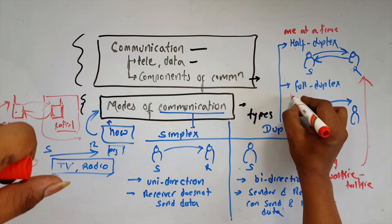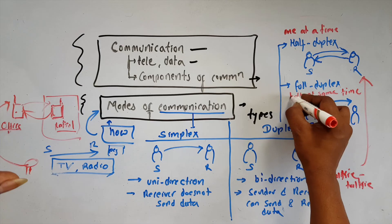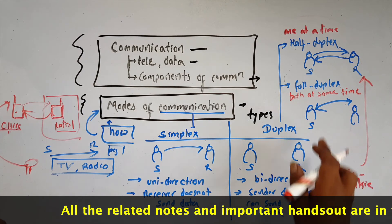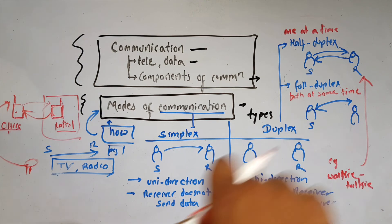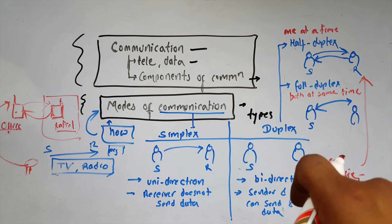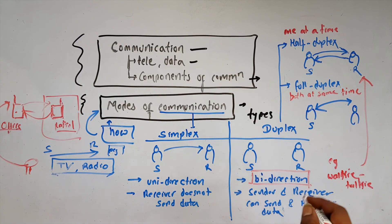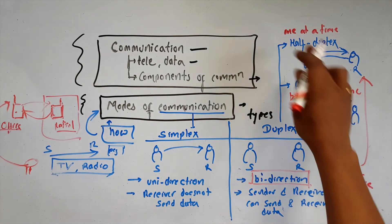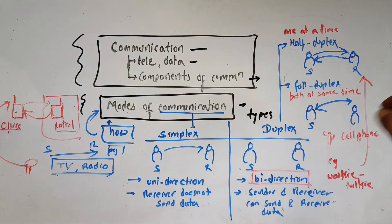Full duplex is a bidirectional mode of communication in which sender and receiver both can send and receive data at the same time — both at the same time simultaneously. The most convenient and widely used mode, full duplex is exemplified by cell phones and landline phones.